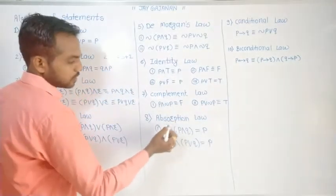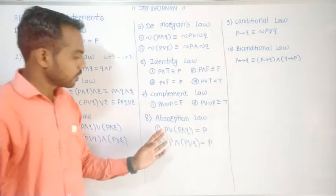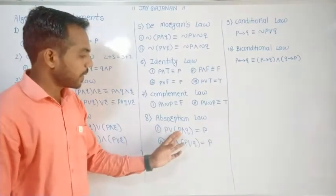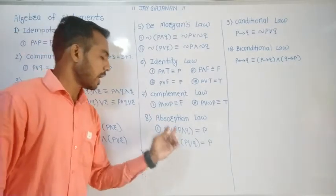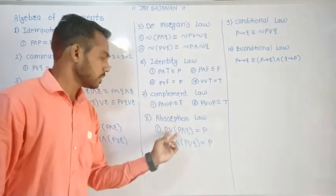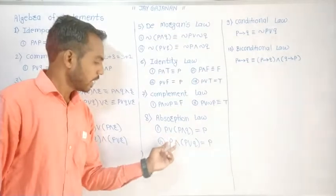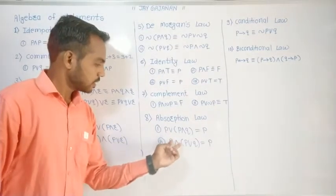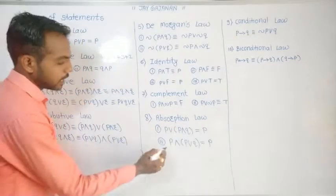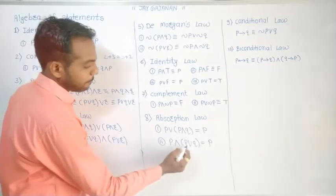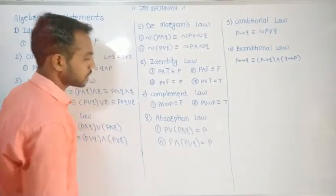The absorption law: P or (P and Q) equals P. If you have a statement where P appears again, the result will be P. Similarly, P and (P or Q) equals P.